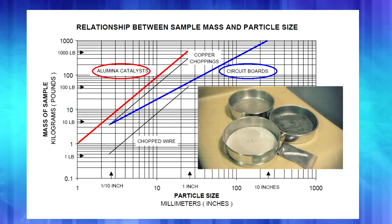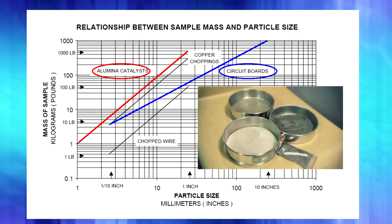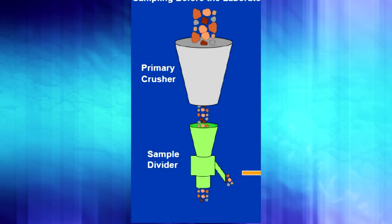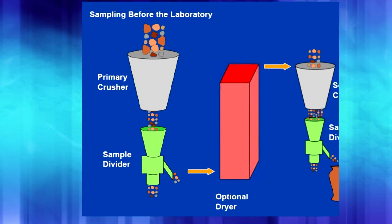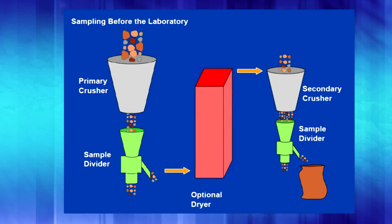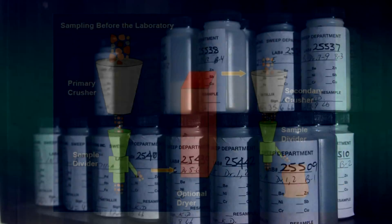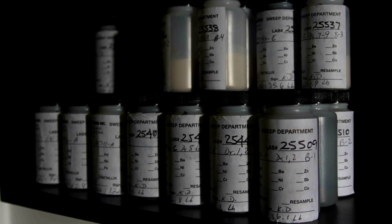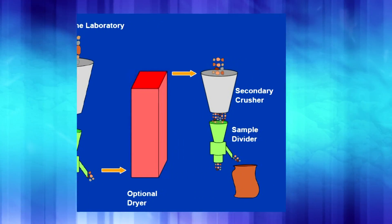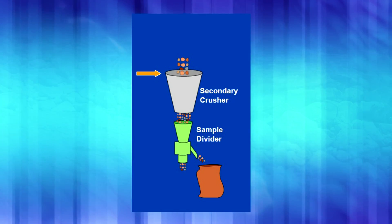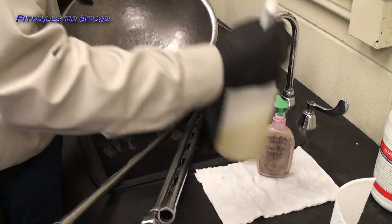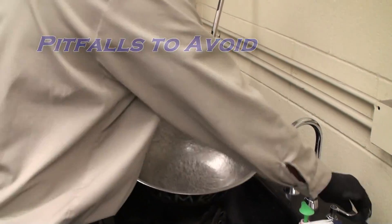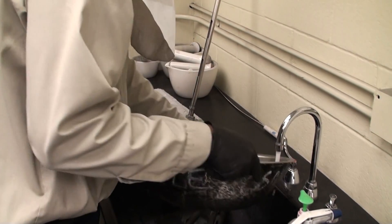Milled, blended, and split test samples are taken from lots and sent for analysis. Assay samples are then taken from the test samples, which typically require further grinding and splitting. There are a number of traps that can produce misleading results that care and handling should avoid.